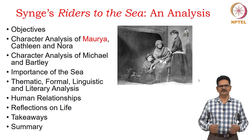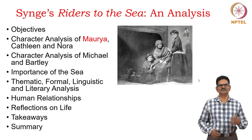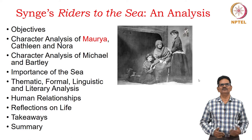Hello friends, we have the second lecture on Synge's Riders to the Sea. We call it an analysis. We will pay attention to some of the details that normally we look at. First, let's see the objectives. Then, character analysis of Maurya, Kathleen and Nora, and the character analysis of Michael and Bartley.